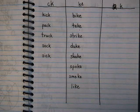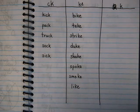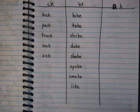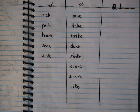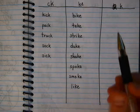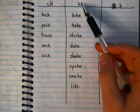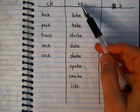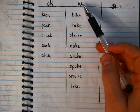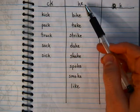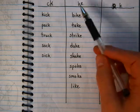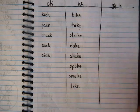Alright, so just to continue the second part of this lesson, I want you to write the word 'lock.' And remember, if it's a short vowel, it's a CK. If it's a long vowel — an A, an E, an I, an O, a U — it goes here with KE.